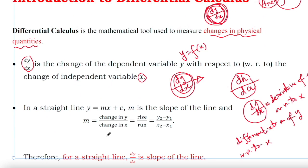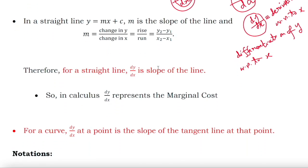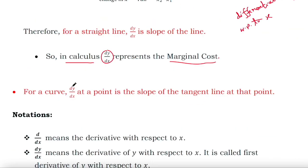Let me summarize the basic discussion. dy/dx is the change of y with respect to the change of x. For a straight line, dy/dx is the slope of that straight line. In business, the slope of a straight line is called marginal cost, so in calculus dy/dx represents the marginal cost of a cost function. For a curve, dy/dx at a point is the slope of the tangent line at that point.